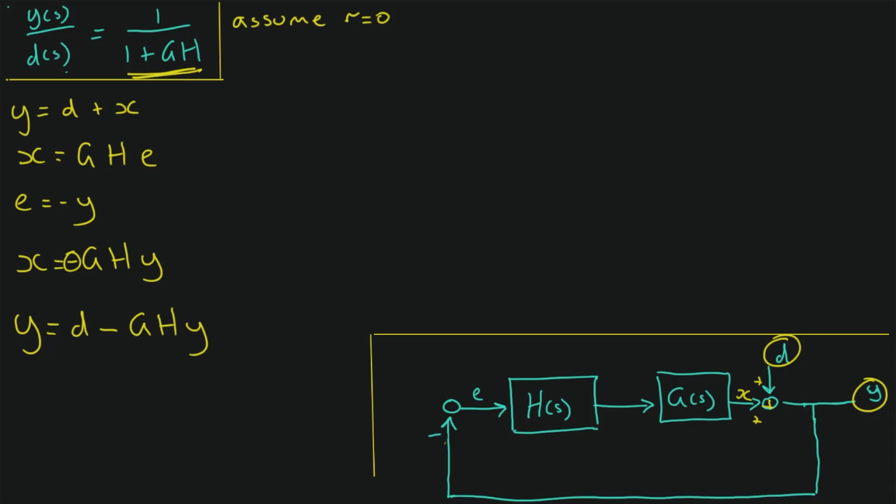We add this right-hand term to both sides. So we get Y plus GHY equals D. And then we pull the Y's out and factor that. So we have Y times (1 plus GH) is equal to D.